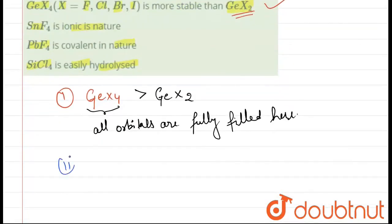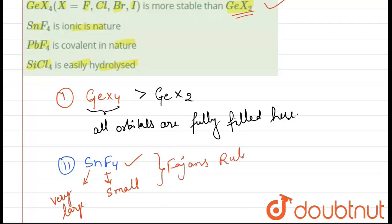So let's look at statement number 2. It is saying that SnF4 is ionic in nature. So this statement is true because if we talk about fluorine, the fluorine atom is very small and Sn atom is very large. So according to Fajan's rule, it is ionic in nature. So this statement is also true.